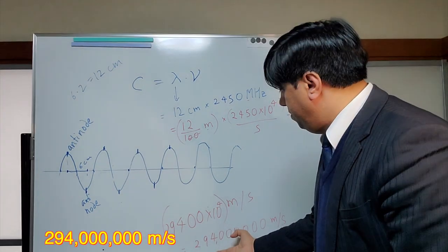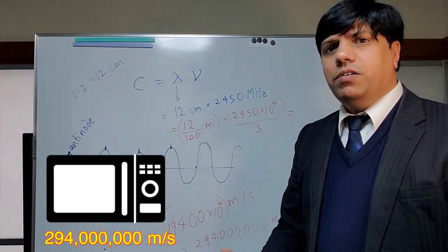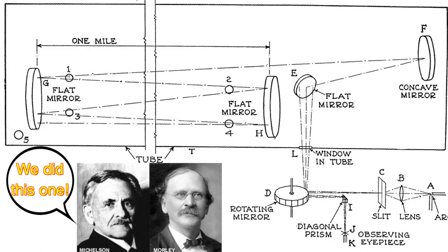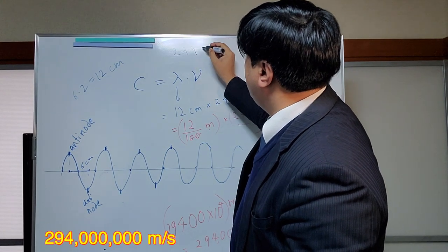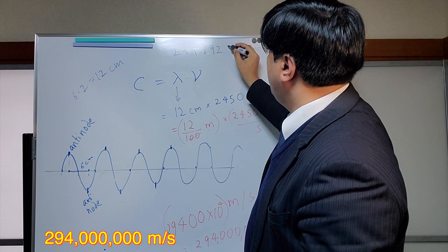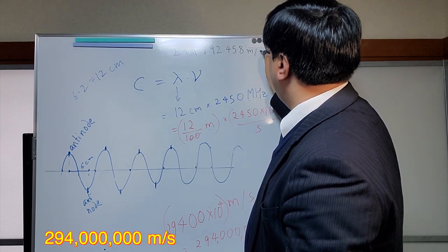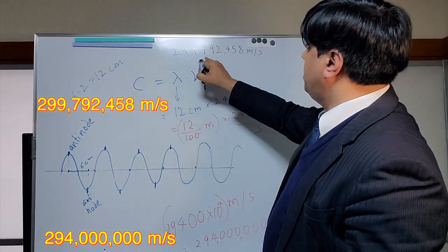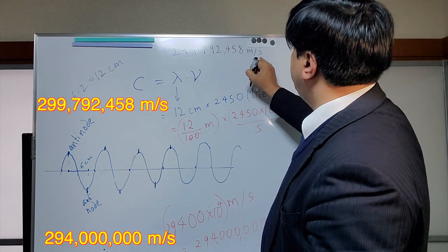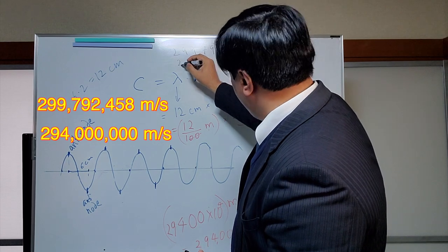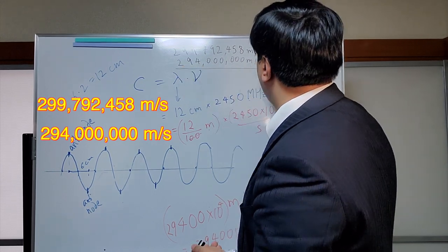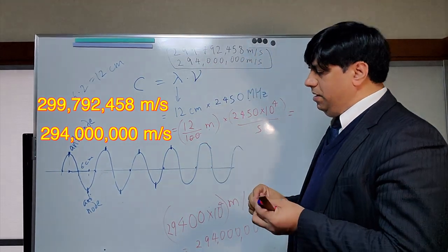That's the speed we measured using our household microwave oven and a bar of chocolate. Now let's see what the actual speed of light is. Scientists use very sophisticated methods to measure the exact speed of light. And what scientists have measured is 299,792,458 meter per second. The speed that we measured is 294 million meter per second. Not too bad. Look at that. Isn't that amazing? It is indeed very amazing.